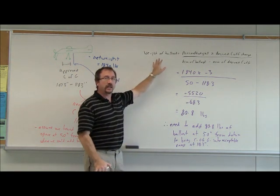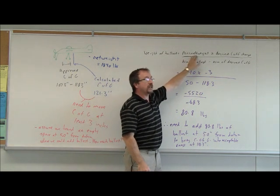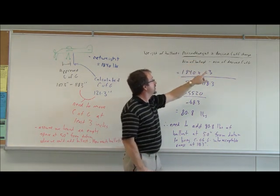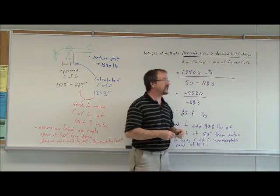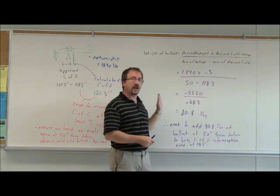The weight of the ballast that we need: we take the aircraft weight empty, 1840 pounds, multiplied by the desired center of gravity change - we want to move it back three inches, so minus three.